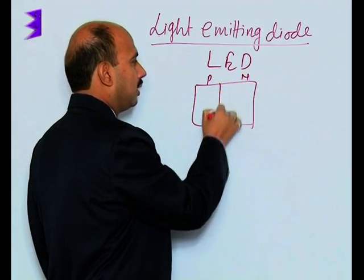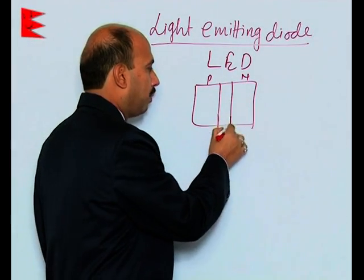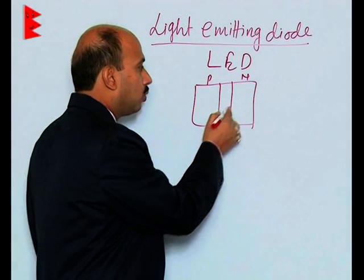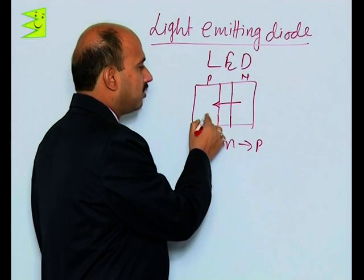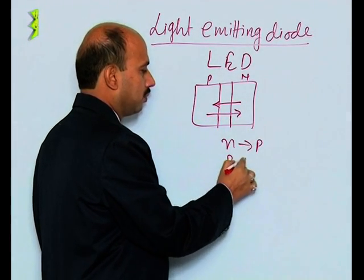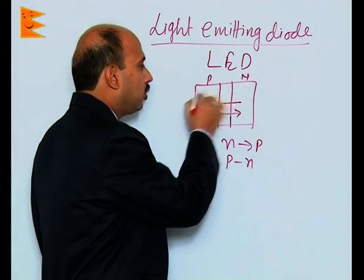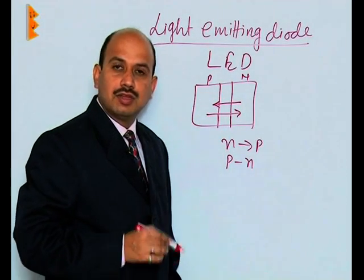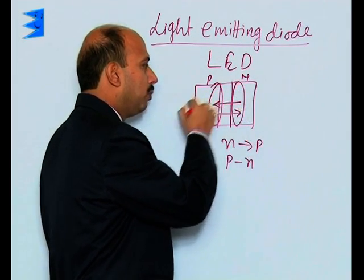...and this is the junction. When these diodes are in forward bias, electrons are sent from n to p and holes are sent from p to n. Because of that, concentration of minority carriers increases near the junction. This means electrons will be more on one side and holes will be more on the other.